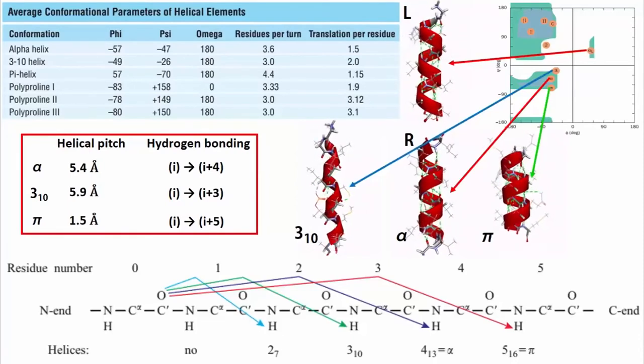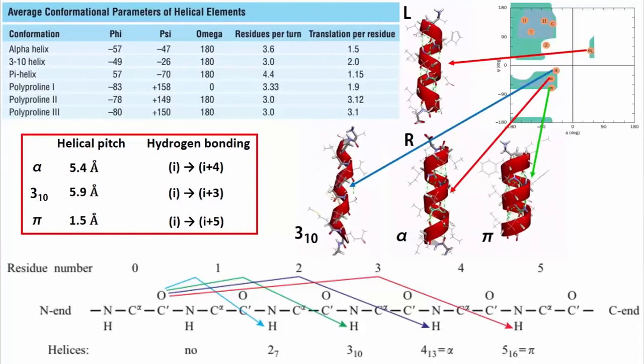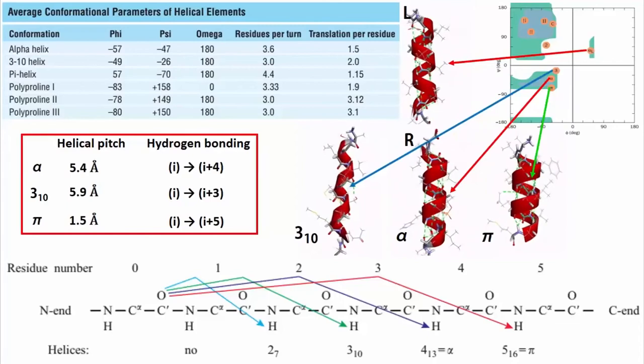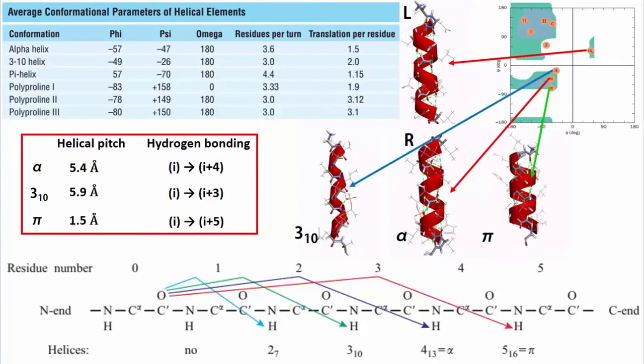See, in alpha helices, irrespective of being left or right-handed, every ith residue has a backbone hydrogen bond with the i plus fourth residue. For 310 helix, this is between i and i plus third residue.